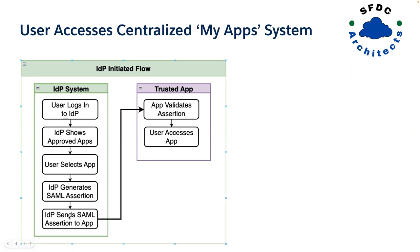The system sends that assertion to the application — it's usually signed and can be encrypted, though encryption is not required. That goes to the service provider, which doesn't just let you in automatically. First, it validates the assertion: it reads it, makes sure the system sending the assertion is already set up and trusted, that it's coming from the right location and is signed properly. Once validated, it grants you access. This is the shorter, simpler flow because the IDP already has part of the information. There are questions on the certification about this, so understand the IDP-initiated flow well compared to the service provider-initiated flow.